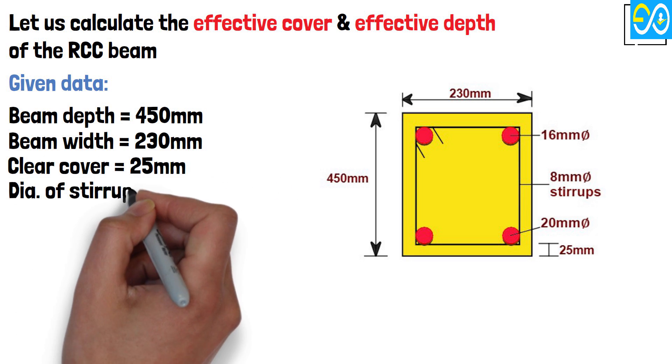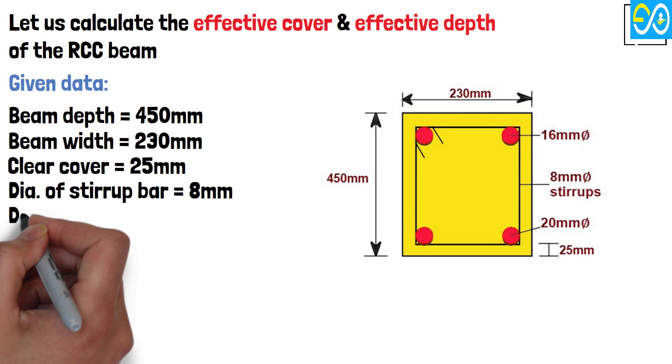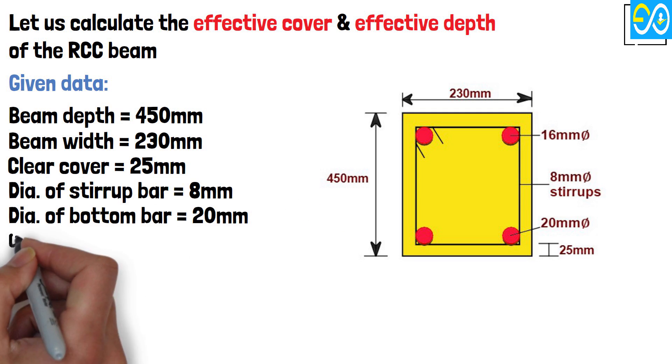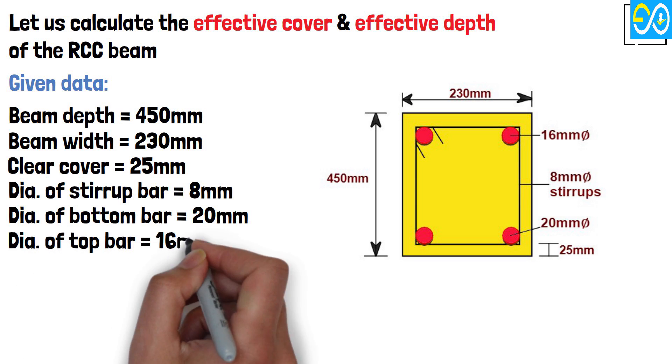Diameter of stirrup bar equals 8 mm. Diameter of bottom bar equals 20 mm. Diameter of top bar equals 16 mm.